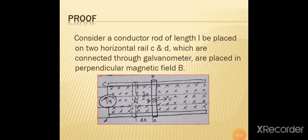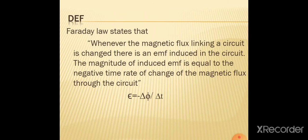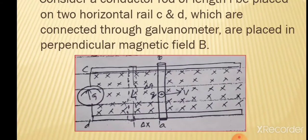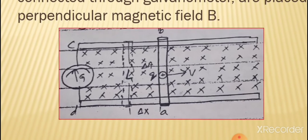ابھی ہم نے Faraday's Law of Electromagnetic Induction کا phenomenon study کیا۔ اب ہم اس کا proof کرتے ہیں کہ یہ relation e = −Δφ/Δt کس طرح سے derive ہوتا ہے۔ اس کے لیے ہم consider کرتے ہیں: a conducting rod of length l placed on two horizontal rails c and d, which are connected through a galvanometer, placed in a perpendicular magnetic field۔